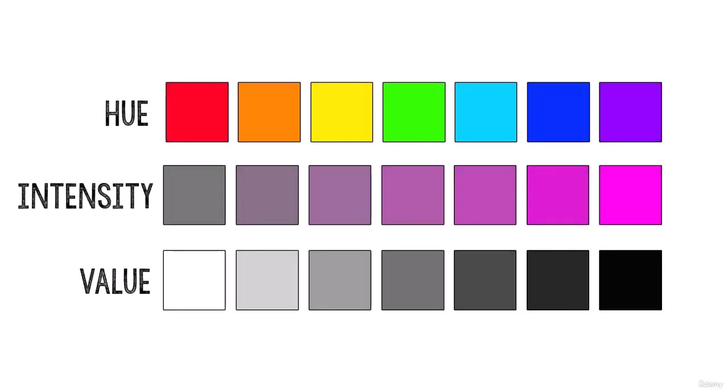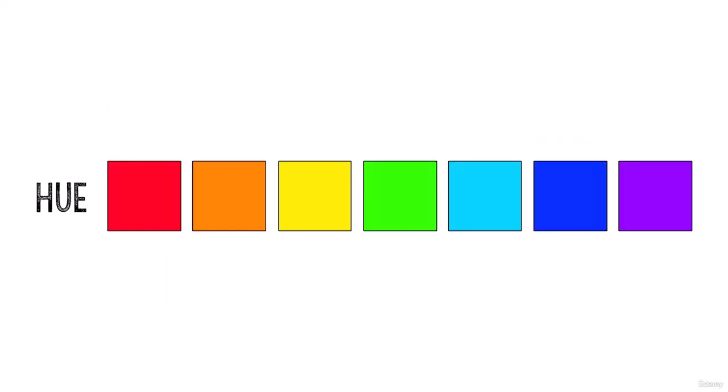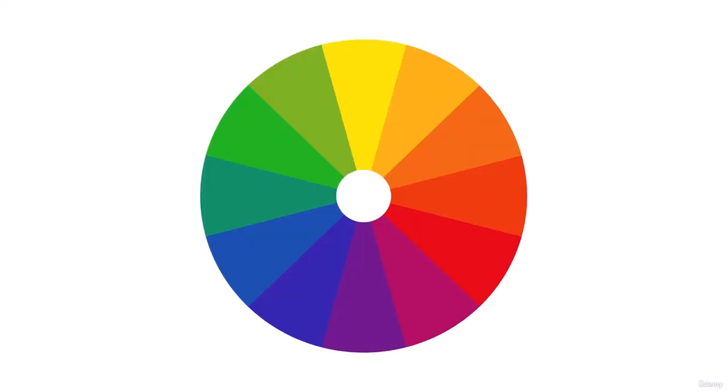There are three properties to every color: hue, intensity, and value. Hue is what people are often referring to when they say color, like red, orange, yellow, etc. Hues are the colors we learned as kids, and they're arranged here around the color wheel.